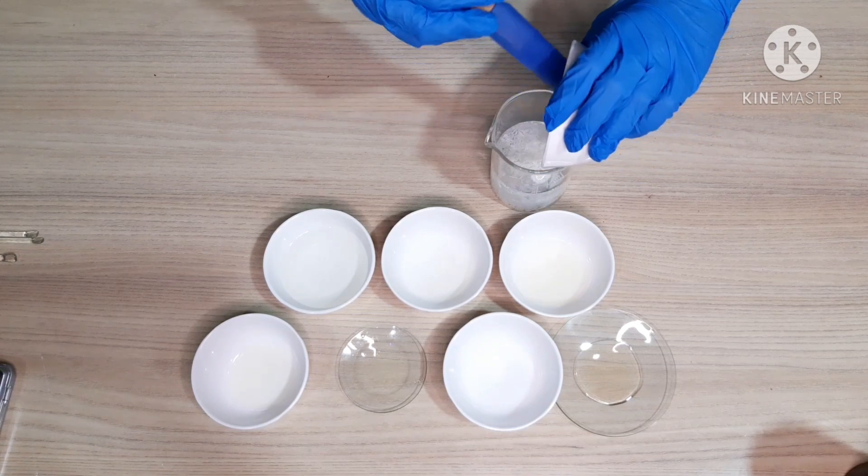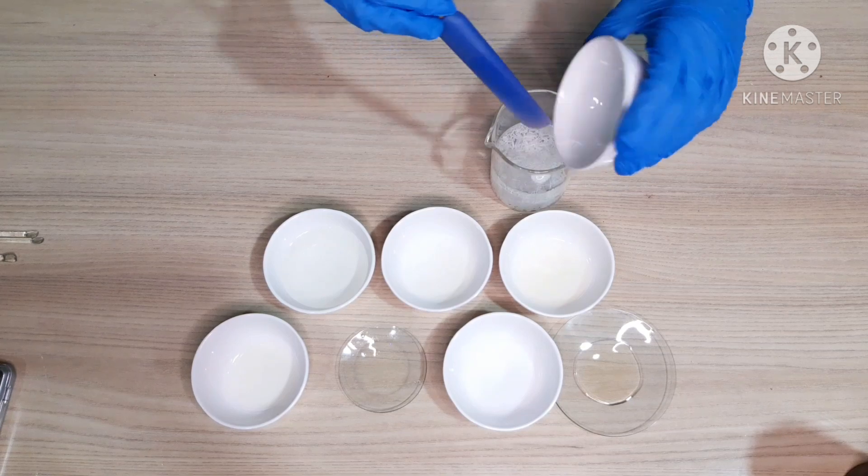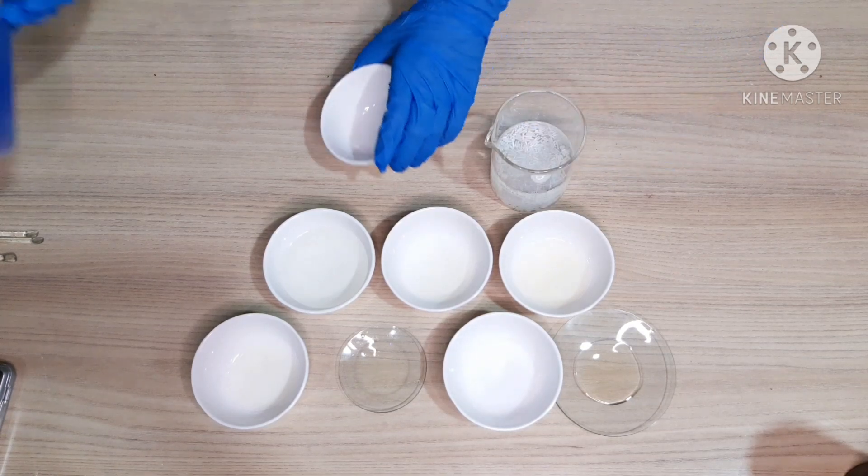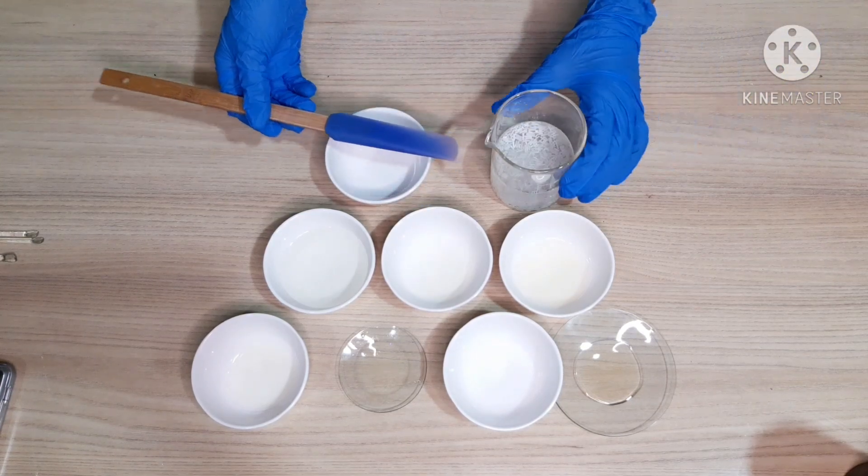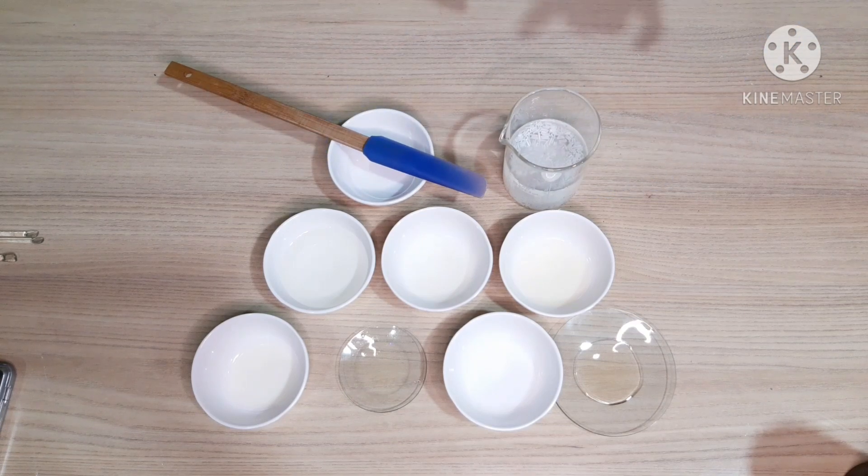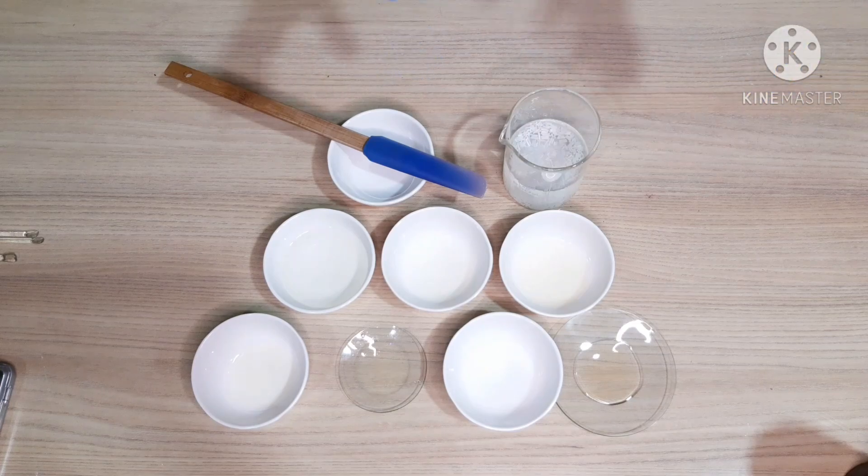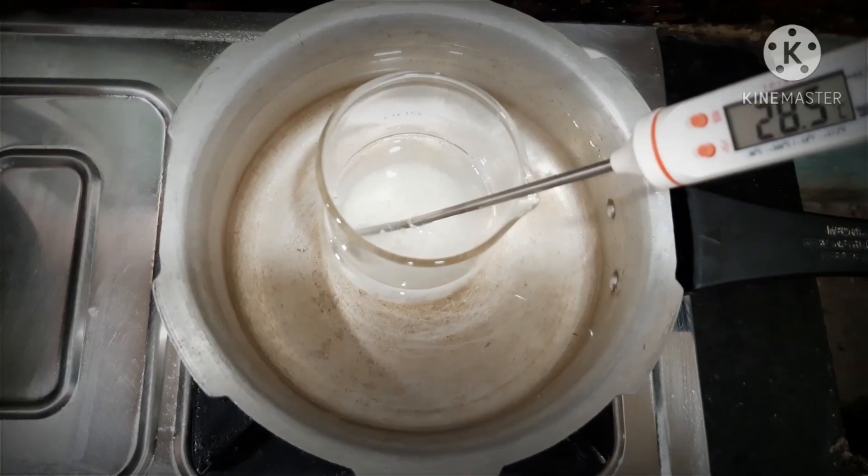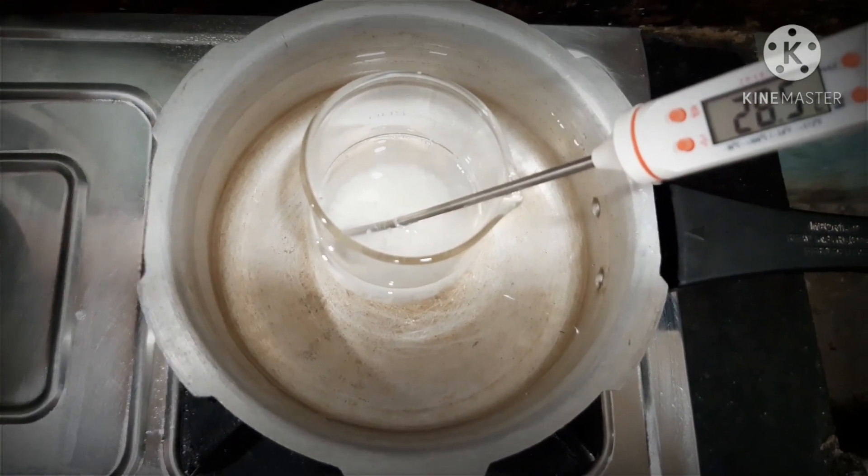It will take some time to melt. It will not melt immediately; it only melts when it reaches 80 degrees and above, so you have to be patient till it melts completely. I'll heat this on a double boiler. This is how I set it up on the double boiler to melt.